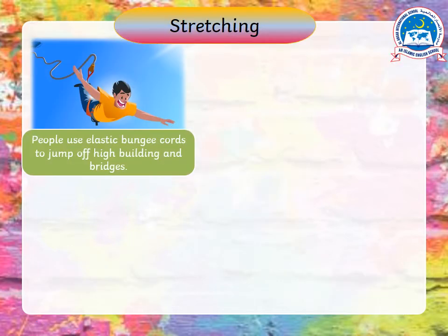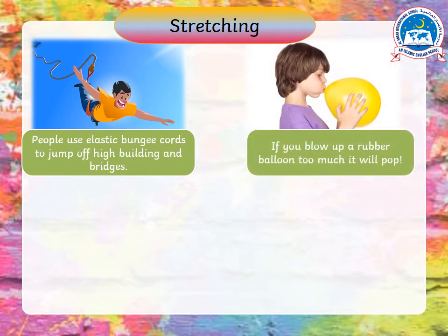Look at the picture, learners. People use elastic bungee cords to jump off high buildings and bridges — it's a fun sport! The connection that keeps them safe and connected to their base is that bungee cord, and it's made of rubber.